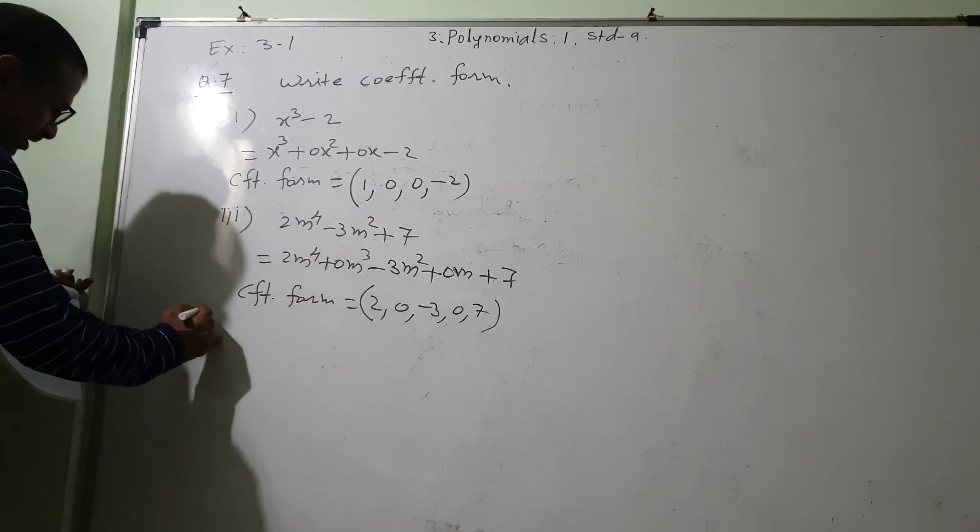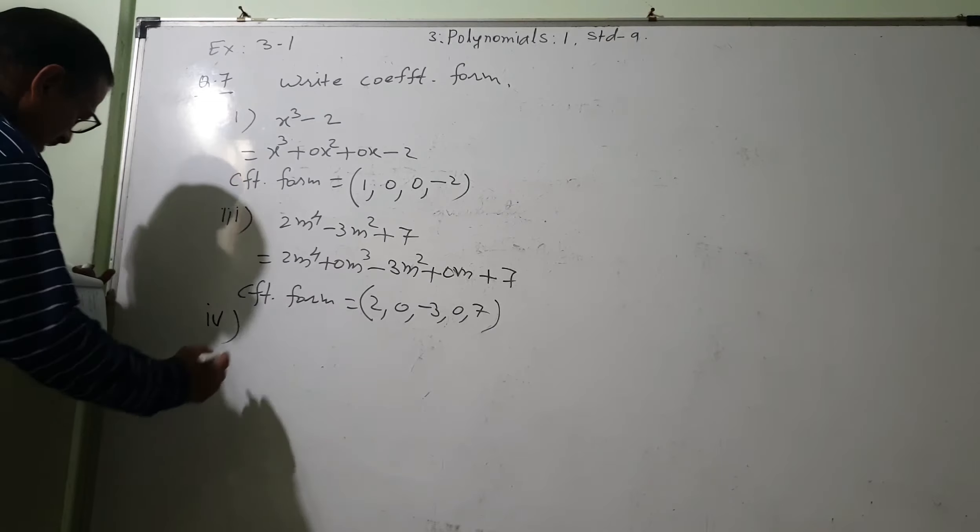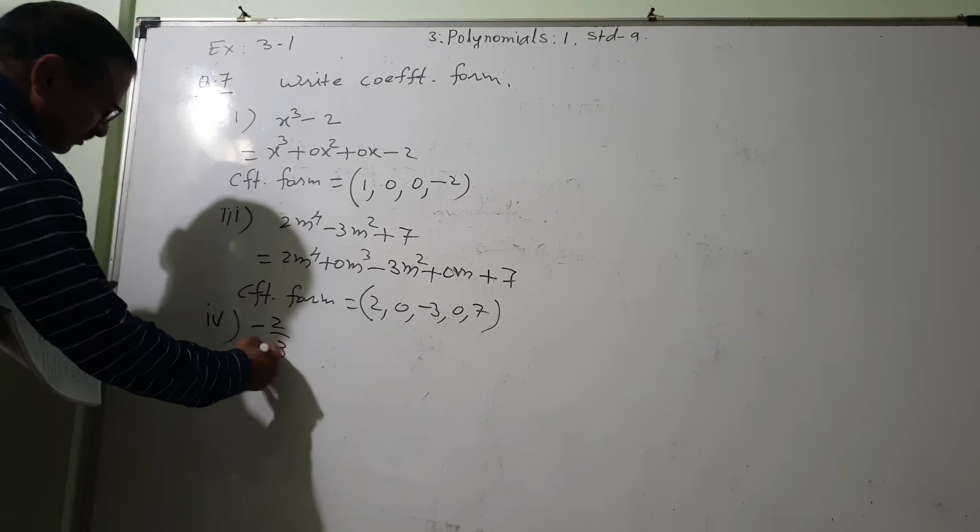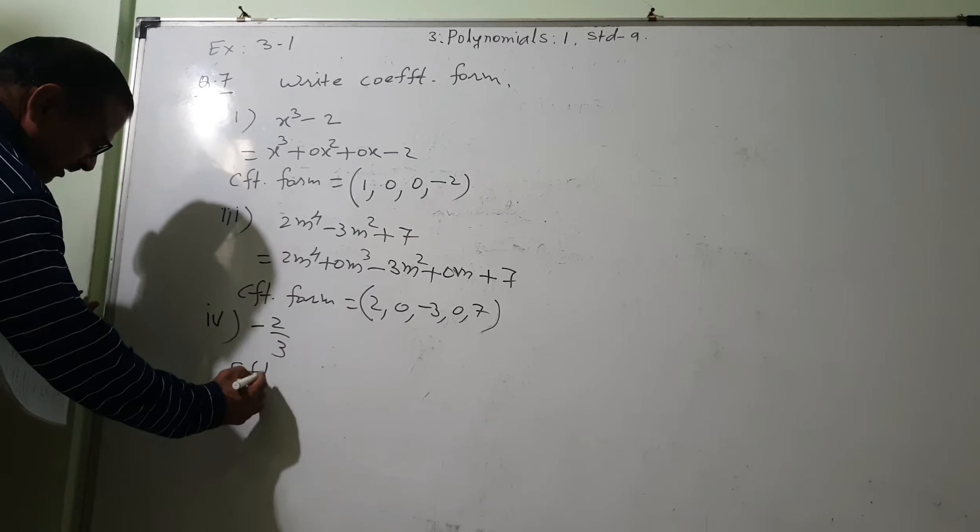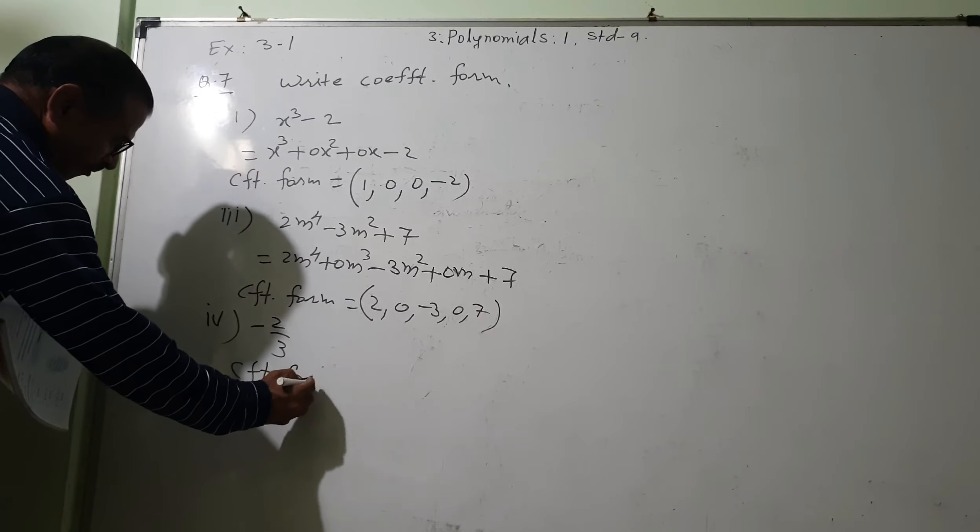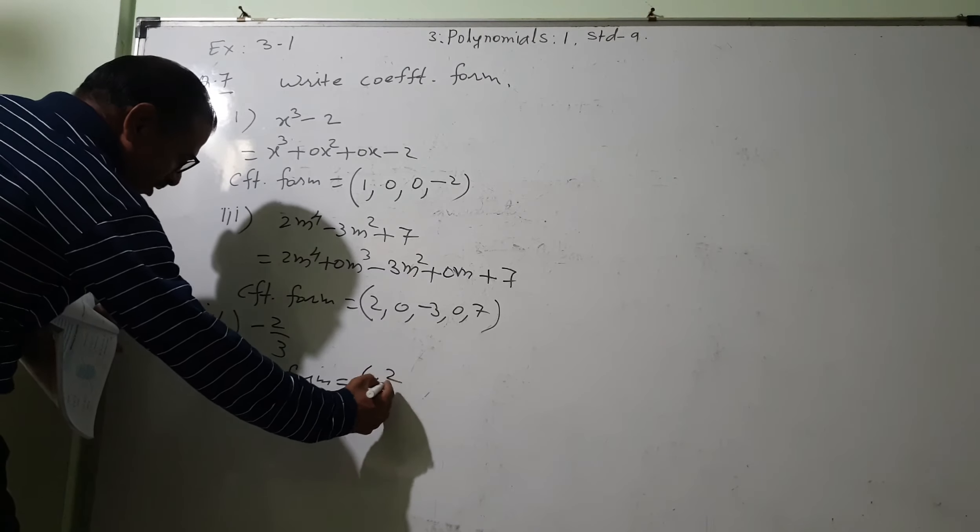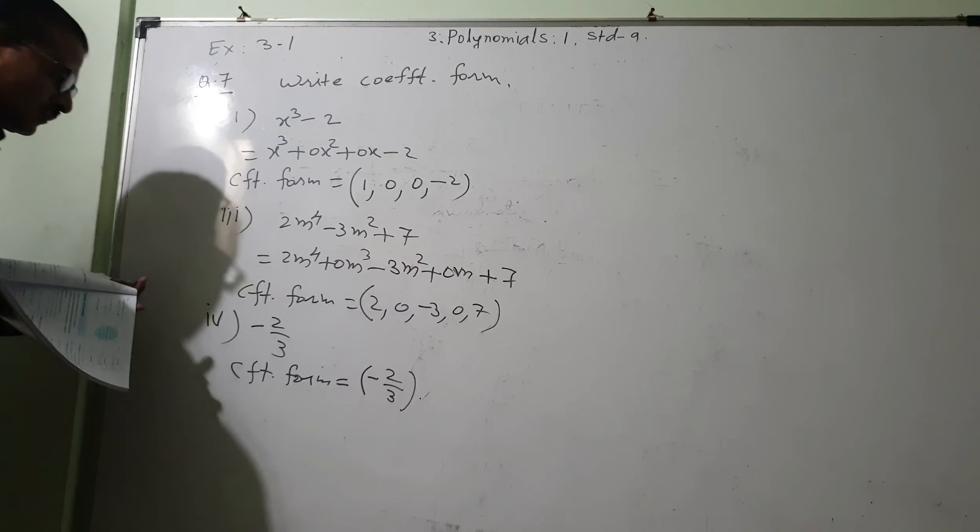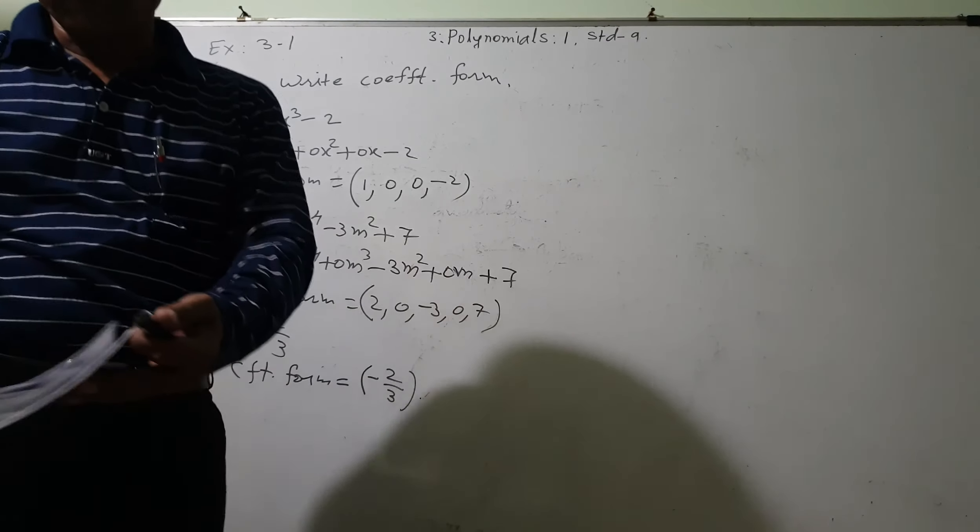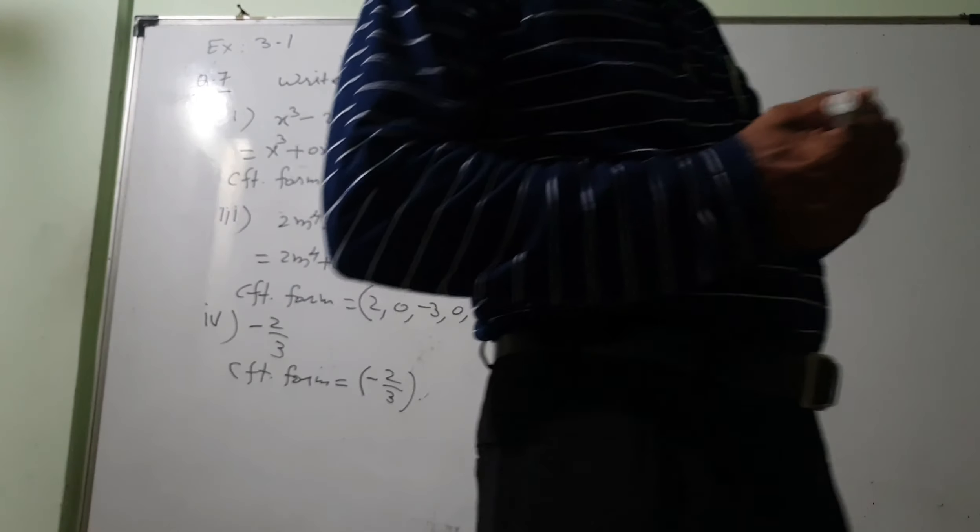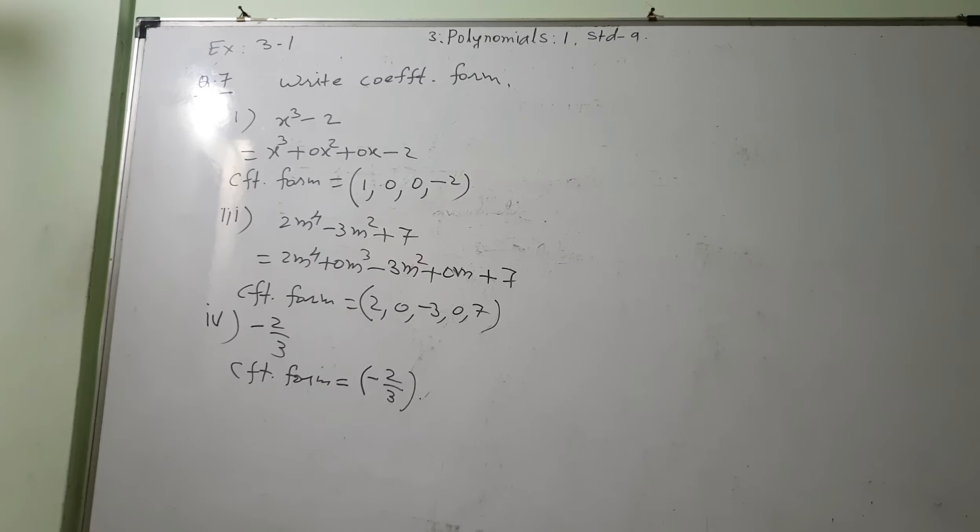Now the fourth is important: minus 2 upon 3. This is a constant term. Coefficient form is, it is a monomial equal to minus 2 upon 3 and that's all. So this is a constant function. So hope that you have understood. Here definitely I will stop this.